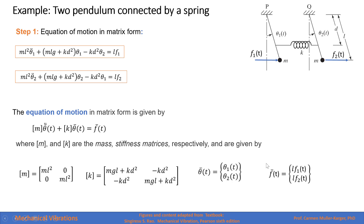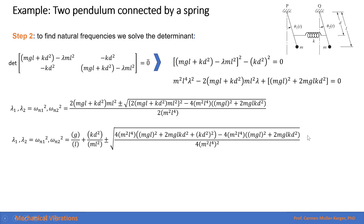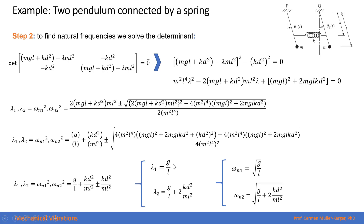We have the generalized coordinate vector and the external force vector. The next step is to find the natural frequencies by solving the eigenvalue problem — computing the determinant and finding the roots of the characteristic polynomial using the quadratic equation. We can expand and simplify the expression. The first eigenvalue equals g over L, which gives the first natural frequency as the square root of gravity divided by the length of the pendulum. Notice this natural frequency is independent of mass or spring constant — it depends only on pendulum length and gravity. The second eigenvalue is a function of gravity, length, spring characteristics, and mass.